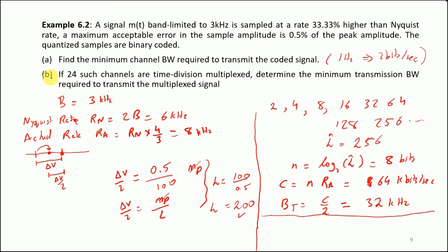For the second part (b), it says that if 24 such channels are time-division multiplexed, determine the minimum transmission bandwidth required to transmit the multiplexed signal. When such multiplexing is done, we know that the capacity Cm would be equal to 24, because there are 24 channels, times the original capacity C. This is going to be 24 times 64k, which is 1.53 megabits per second. Hence the transmission BT for 24 channels is going to be Cm/2, which is simply 0.768 megahertz.